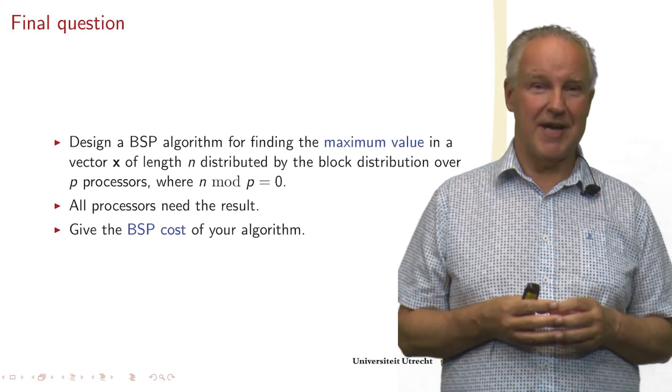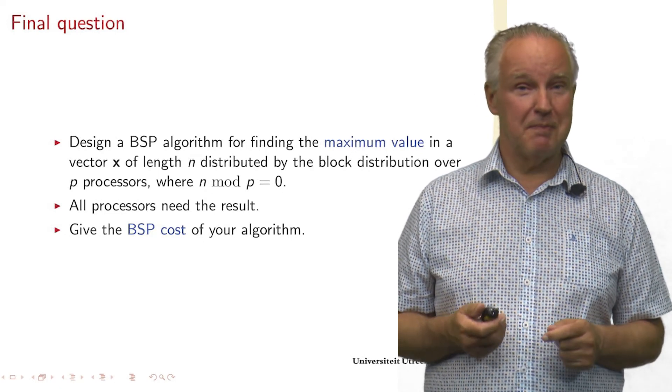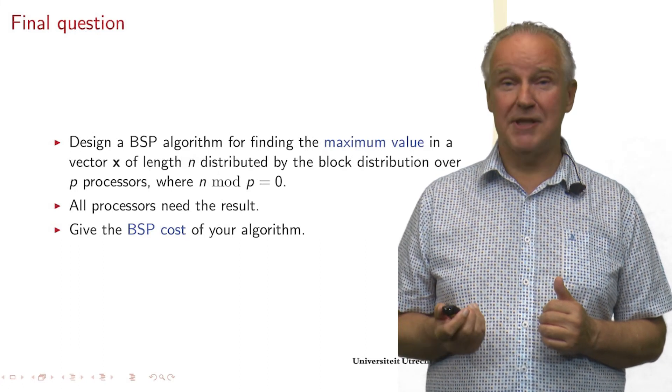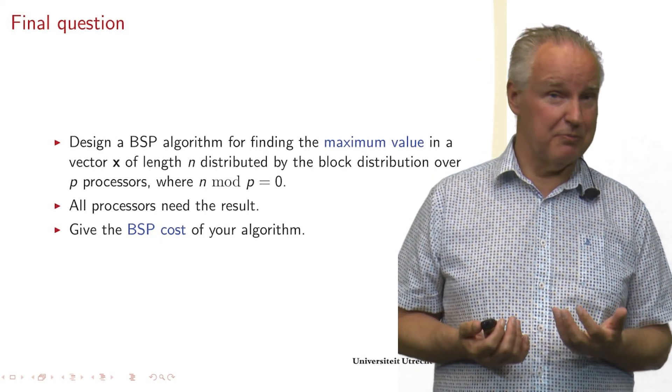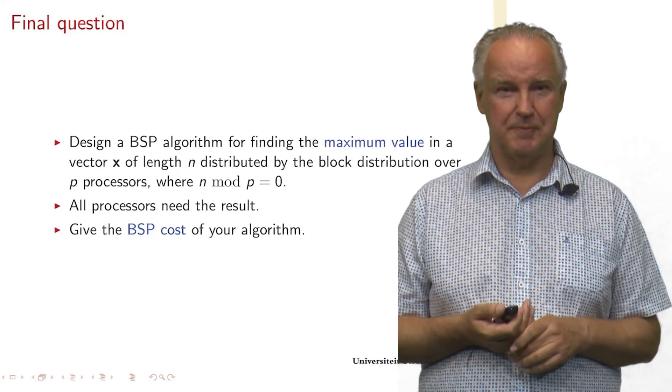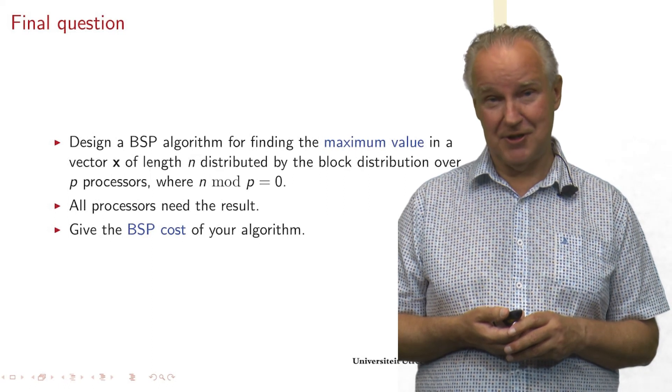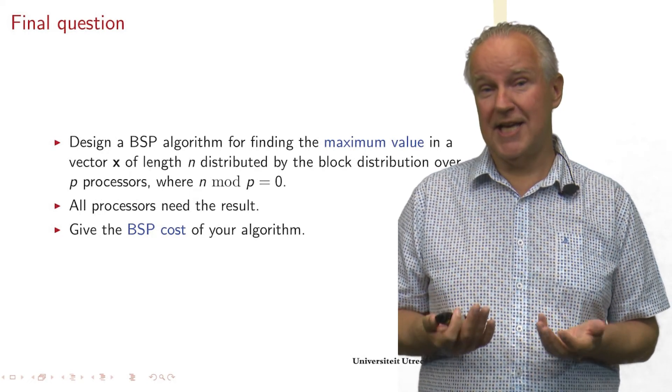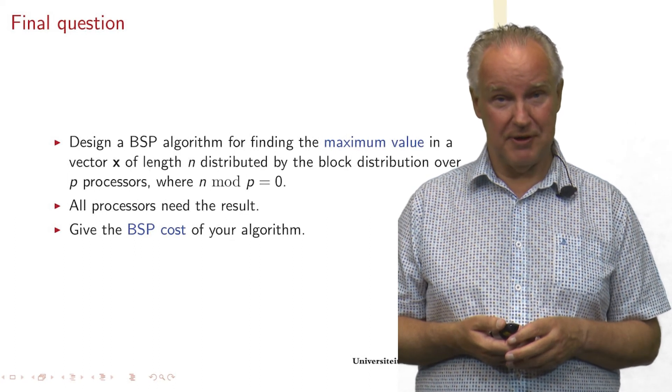So I have a final question to you. Design a BSP algorithm for computing the maximum in a vector X of length N, distributed by the block distribution. And to make this easier, we may assume that the number of processes P is a divisor of N, meaning that N modulo P equals 0. And we need all processes to have the result at the end of the algorithm. Write the algorithm in the form that I showed you in SPMD style. And also you should analyze the cost of the algorithm, the time it takes.